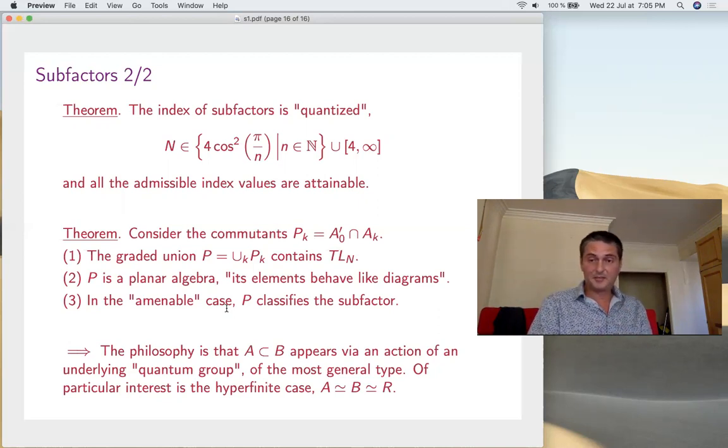Is this interesting? It's definitely very interesting, because in general, this suggests that A ⊂ B appears somehow by an action of an underlying quantum group on the big one. These commutants are the most general quantum groups possible, more general than any kind of quantum group, or tensor category, or whatever other thing we met from free probability, for instance, in noncommutative geometry. Very, very general. Of particular interest is the hyperfinite case. Classifying the subfactors of the hyperfinite R is a very good question.